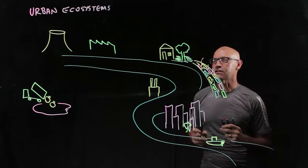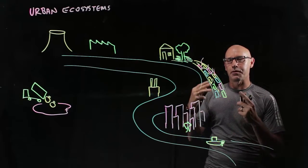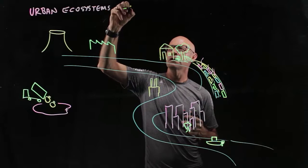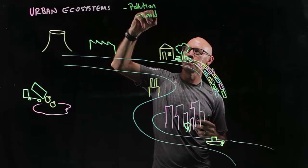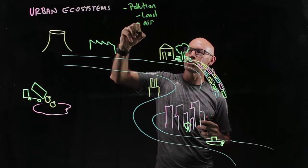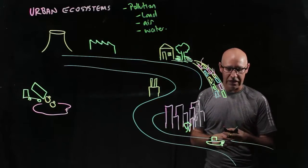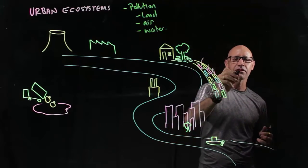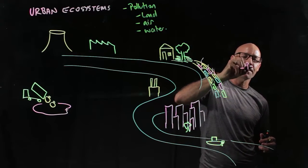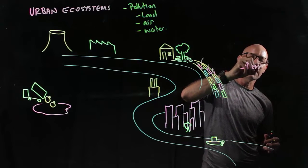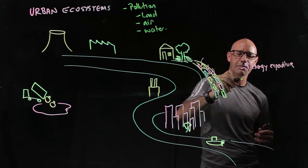One of the things that we can say about urban ecosystems is that humans pollute in three different areas. We have different types of pollution: land pollution, air pollution, and water pollution. And largely, it's related to the fact that when we have all these people in such a small area, we've got a tremendous demand for energy, huge energy expenditure, and we also produce a massive amount of waste.